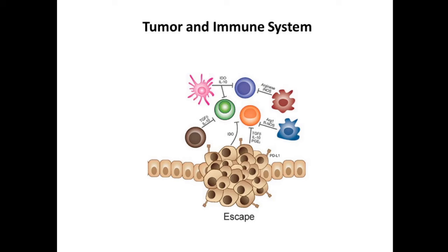As per this figure, what you are seeing is that there is an active proliferating tumor in the center which is growing in an uncontrolled manner, and by several mechanisms it tries to evade from the immune cells. Thus these tumor cells escape from the defense mechanism of your body.